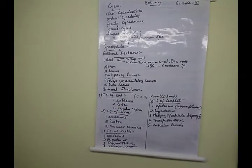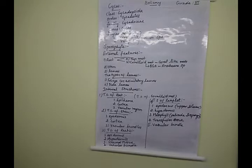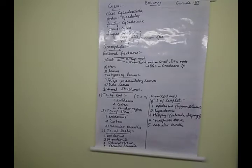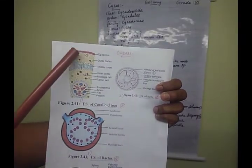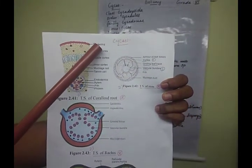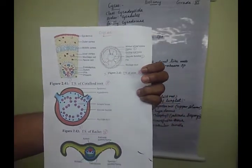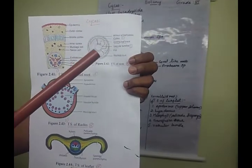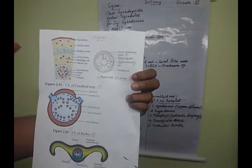Let us learn one by one. First, the epiblema: it is the outermost layer of the root, known as epiblema. It consists of a single layer of parenchymatous cells — only one layer. The outermost layer of the root is called epiblema, while in the leaf and stem the outermost layer is called epidermis.